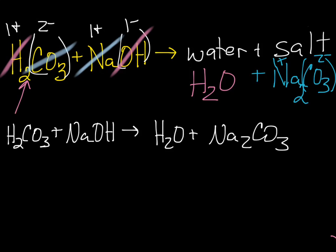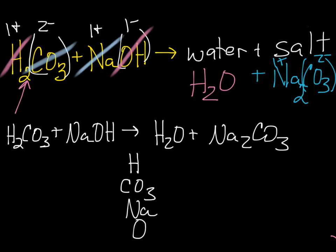Now we've written the neutralization reaction. What we need to do is balance the equation. We have H's, we have CO3 as one unit since it's a polyatomic ion on both sides, we have Na, and we have O. On the reactant side, we have two H's in the acid and one H in the base — that makes three H's. On the product side, we have two H's. CO3: one on each side. Na: one on the reactant side, two on the product side. O's: one on the reactant side and one on the product side.